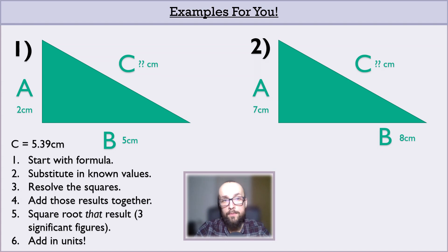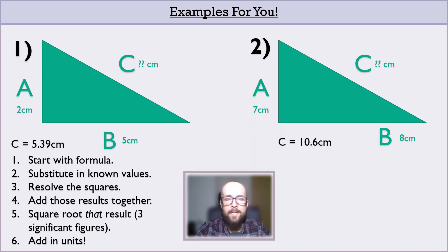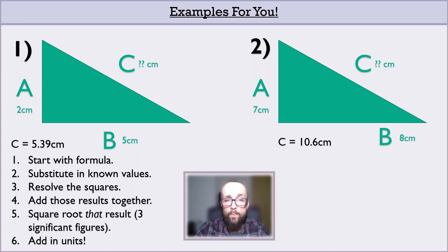The answer for the second example is 10.6 centimetres — well done if you got that. The workings: A squared plus B squared equals C squared, so 7 squared plus 8 squared equals C squared. 7 times 7 is 49, and 8 times 8 is 64, so 49 plus 64 equals C squared. 49 plus 64 is 113, so that is C squared. To get to C, find the square root of 113, which should be between 10 and 11, because 10 squared is 100 and 11 squared is 121. The calculator gives root 113 as 10.6301..., which we round to 10.6 to three significant figures. Remembering our units: C equals 10.6 centimetres.